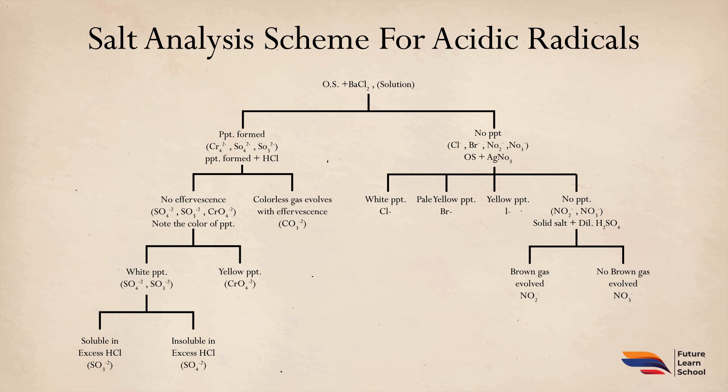To distinguish between sulfate and sulfite, we dissolve the precipitates in excess HCl. If the precipitates are soluble in excess HCl, then sulfite is indicated. If the precipitates are not soluble in excess HCl, then sulfate is indicated. These were the indication tests used to identify the possible acidic radical in the given salt.